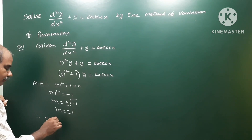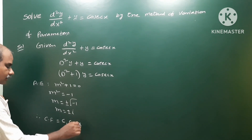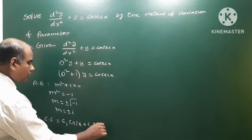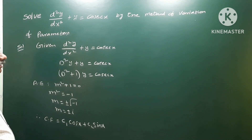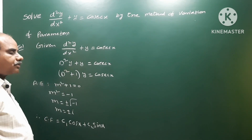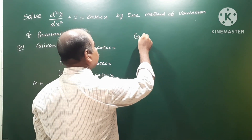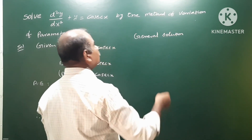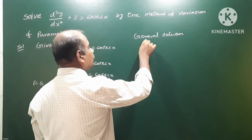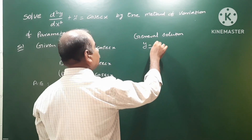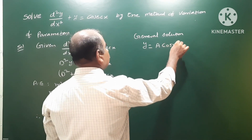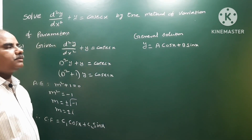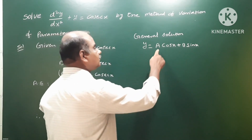Therefore the complementary function is c₁cos(x) + c₂sin(x). The general solution is y = A·cos(x) + B·sin(x). In this method, A and B are functions of x, and we have to calculate these values.